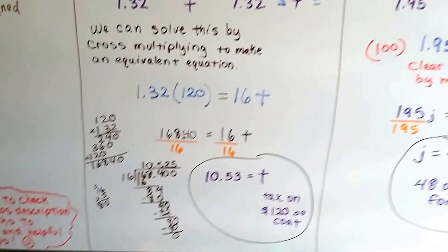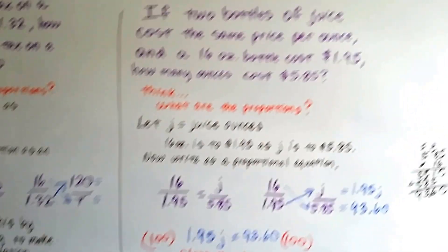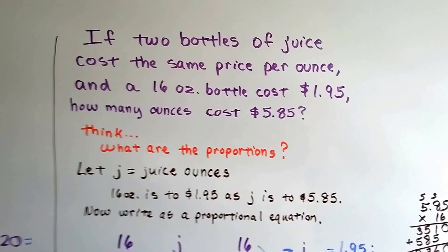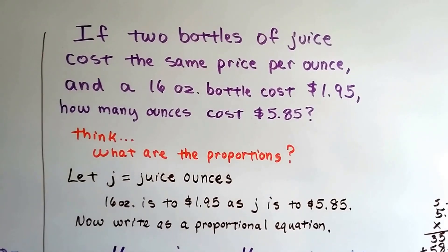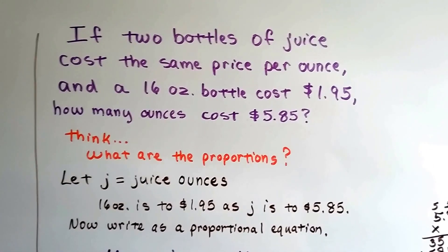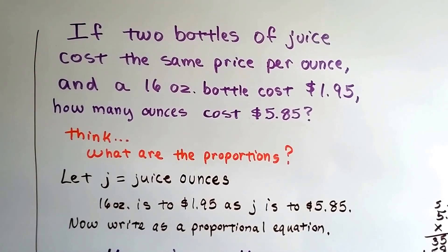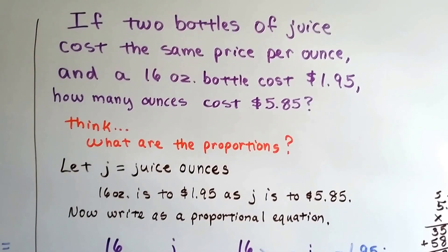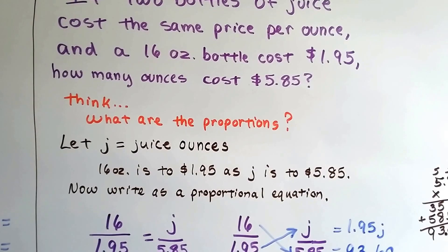Did you see how we did that? Let's try one more. If two bottles of juice cost the same price per ounce, and a 16-ounce bottle costs $1.95, how many ounces would we get for $5.85? So we think, what are the proportions? We're going to let j equal the juice ounces.